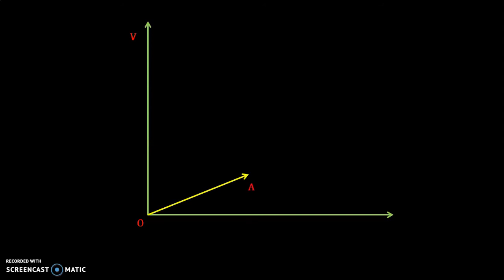We have phasor OA and that is ISM, which is the starting current of the main winding, and it is making an angle with the voltage axis and that is theta_M. If we take AB parallel to our y-axis, AB can be equal to V divided by RA, where V is applied voltage and RA can be assumed as total starting resistance. And if we draw a phasor for the starting current of the auxiliary winding.